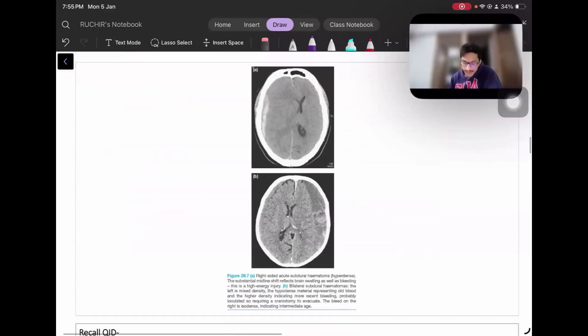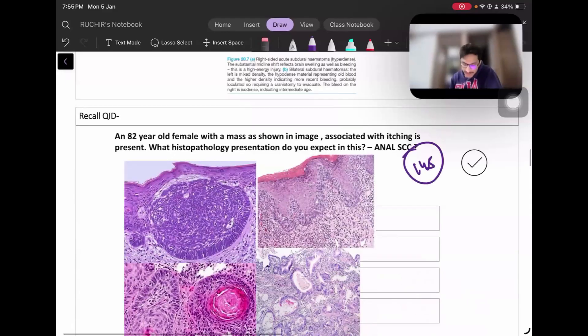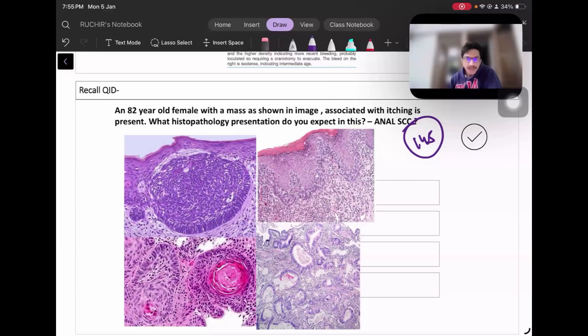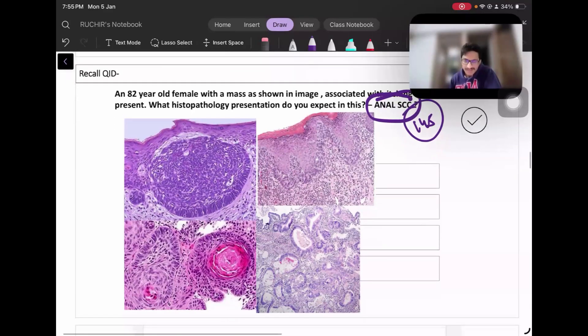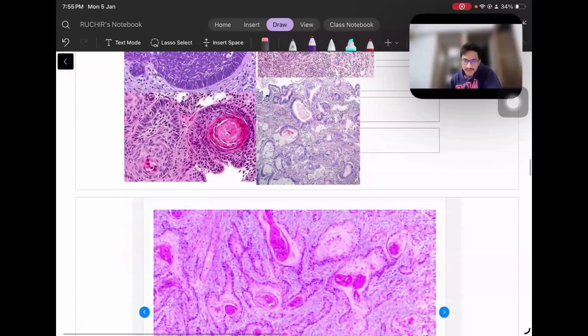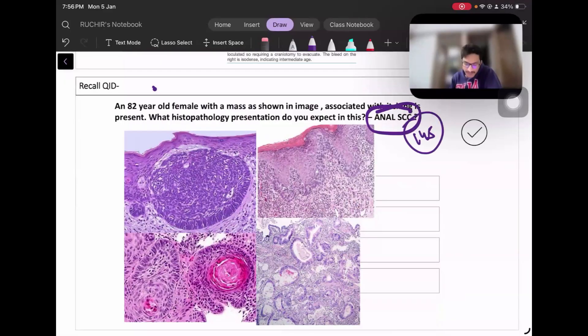Next question is about a patient with anal squamous cell carcinoma. Image given, and there was itching present. They asked about histopathological image identification with perianal SCC given. This is a slightly difficult question, but you need to see the age. Even perianal - I didn't include the image in this slide, but with the image you guys gave me, it's suggestive of squamous cell carcinoma.